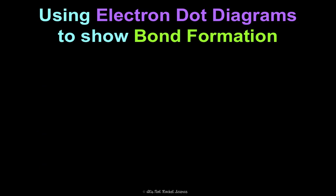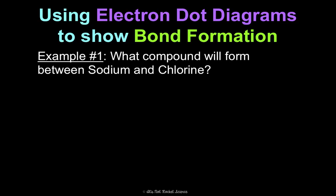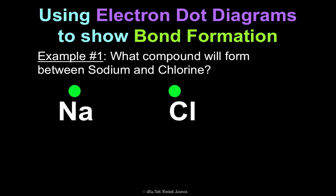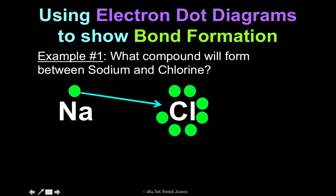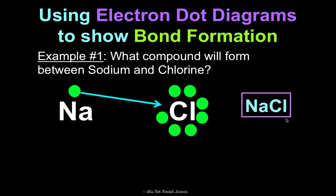Let's do an example: what compound will form between sodium and chlorine? First draw sodium — use Na as your nucleus; it's in group one so it has one valence electron. Now draw chlorine — use Cl as your nucleus; it's in group 17 so it has seven valence electrons. Next, transfer electrons from the metal to the non-metal: sodium gives up its one valence electron to chlorine. Now sodium is stable with eight in its outer energy level, and chlorine is stable with eight as well. It took one sodium and one chlorine, so we don't write the ones as subscripts — the compound is simply NaCl.